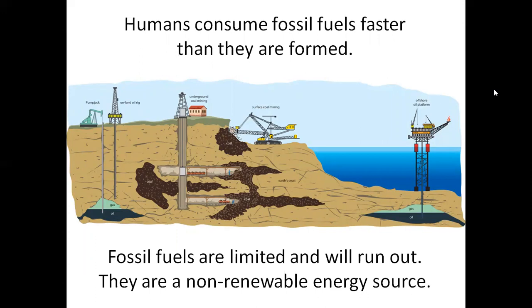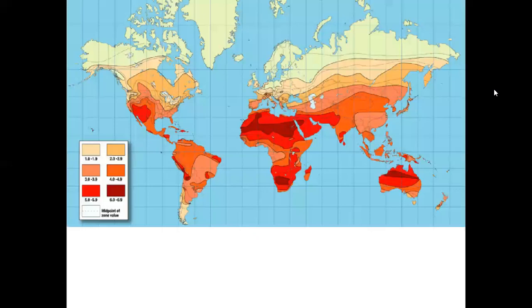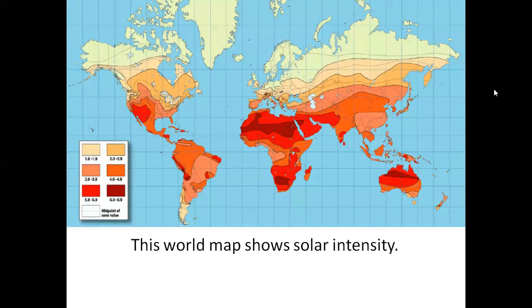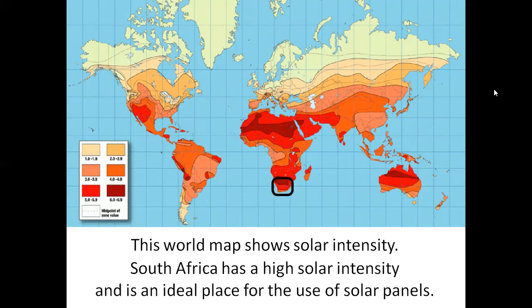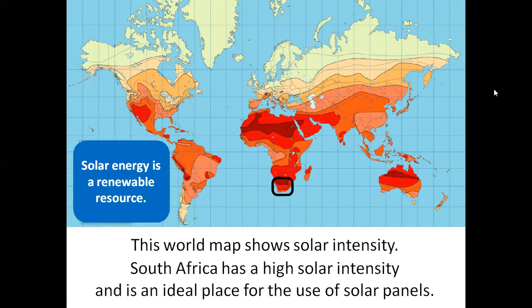Fossil fuels will run out — they are a non-renewable energy source. This world map shows solar intensity. South Africa has a high solar intensity and is an ideal place for the use of solar panels. Solar energy is a renewable resource.